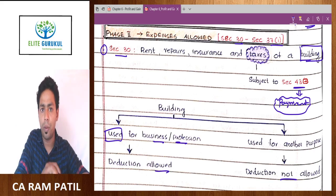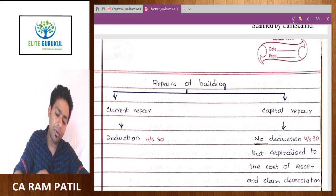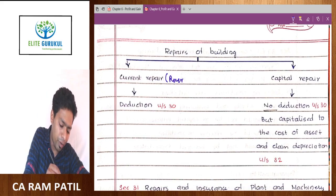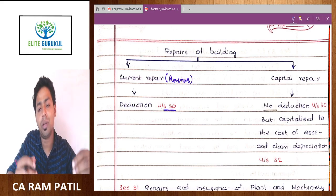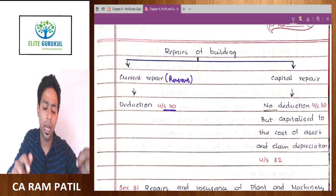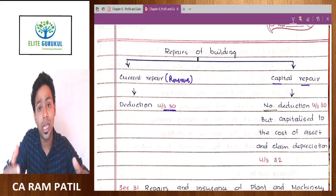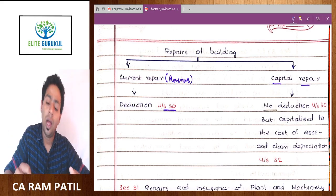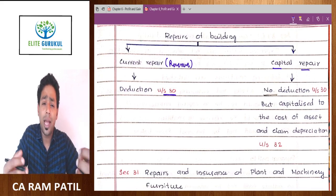One more point from this section: whenever we talk about repairs, there are two types. There are repairs called revenue repair, also known as revenue nature repair. Revenue nature repair means current repair in income tax, which is allowed as a deduction under Section 30b because it is an expenditure recurring in nature. But there are expenditures known as capital nature repair — like changing wall tiles, flooring tiles, bathroom fittings, or demolishing and reconstructing part of the building. That is a capital nature repair.